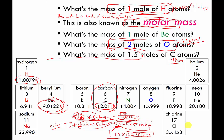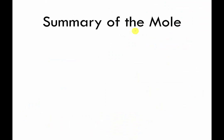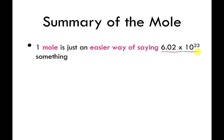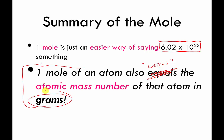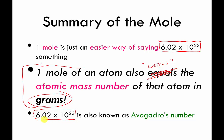You should be able to do these calculations: given how many moles of something you have, use the periodic table to figure out how much that many moles weighs. You should also know the definition of molar mass. Summary: a mole is just an easier way of saying 6.02×10²³ — one mole of an atom weighs the average atomic mass number but in units of grams. This number, 6.02×10²³, is also known as Avogadro's number.